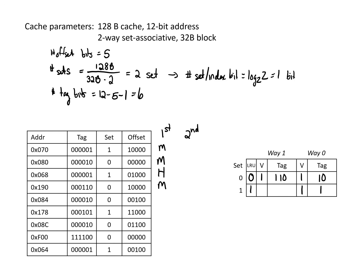For the next address, we're looking for tag 1,0 in set 0. We find that tag 1,0 is indeed in way 0, so this is a hit. We update our least recently used to 1. For the next address, we're looking at set 1 for tag 1,0,1. We look at set 1 and don't have 1,0,1 anywhere, so we put it into the least recently used way, which is way 1 based on our LRU bits. We update our LRU bit to 0, and this access is a miss.